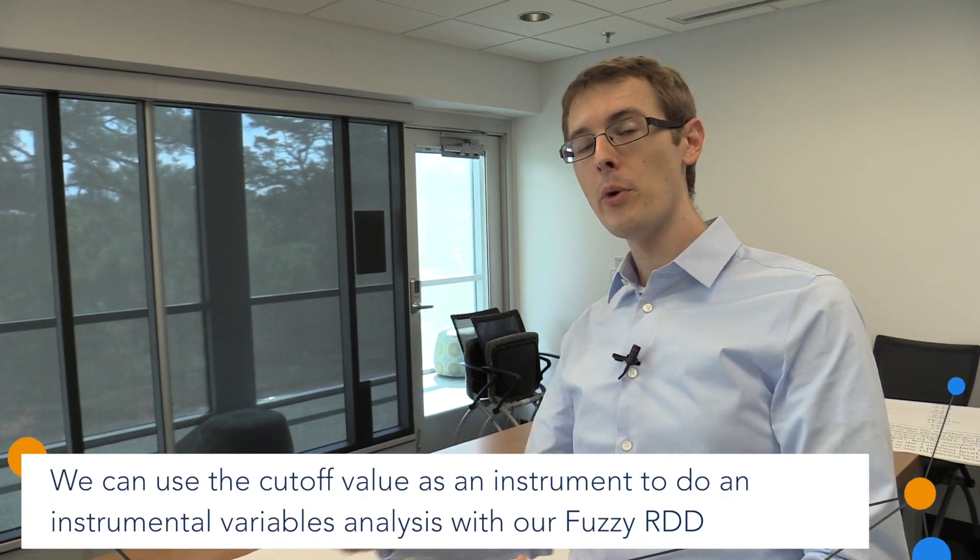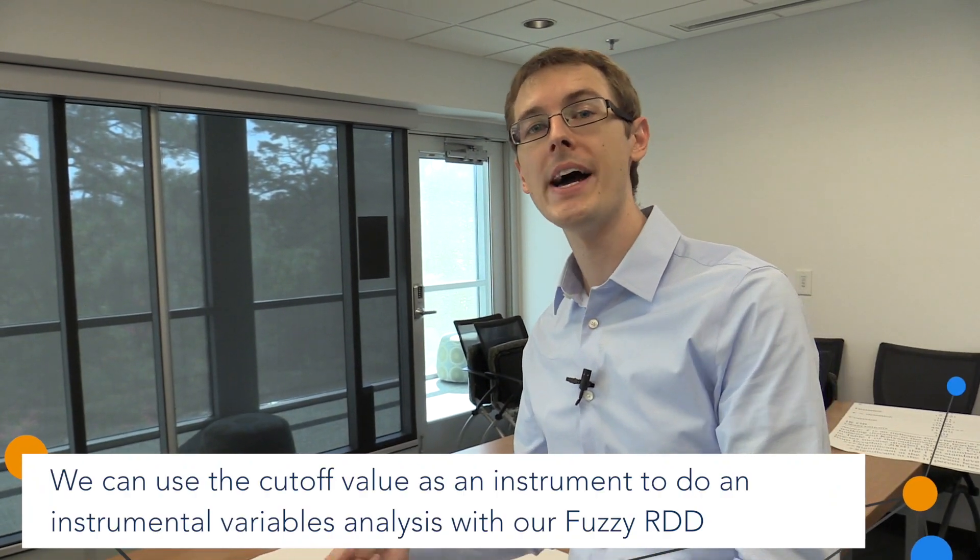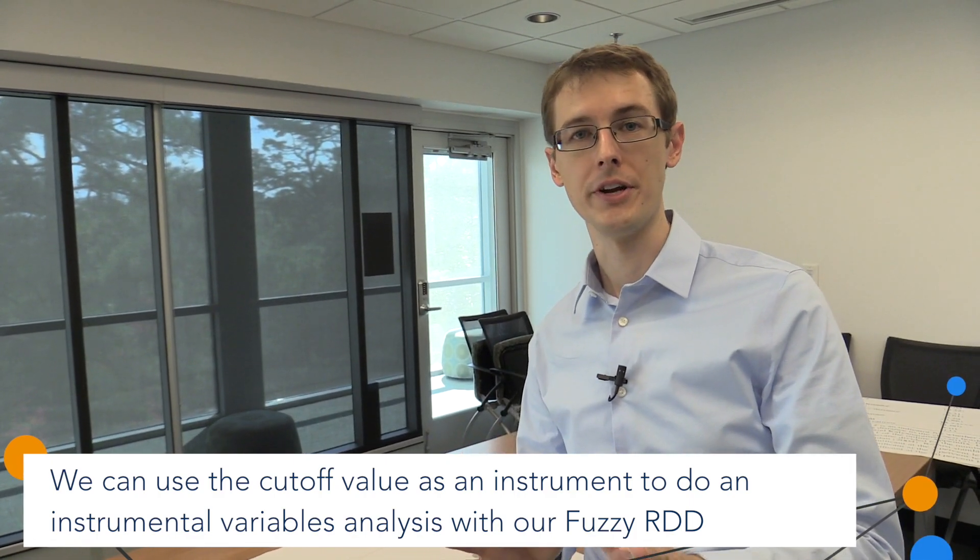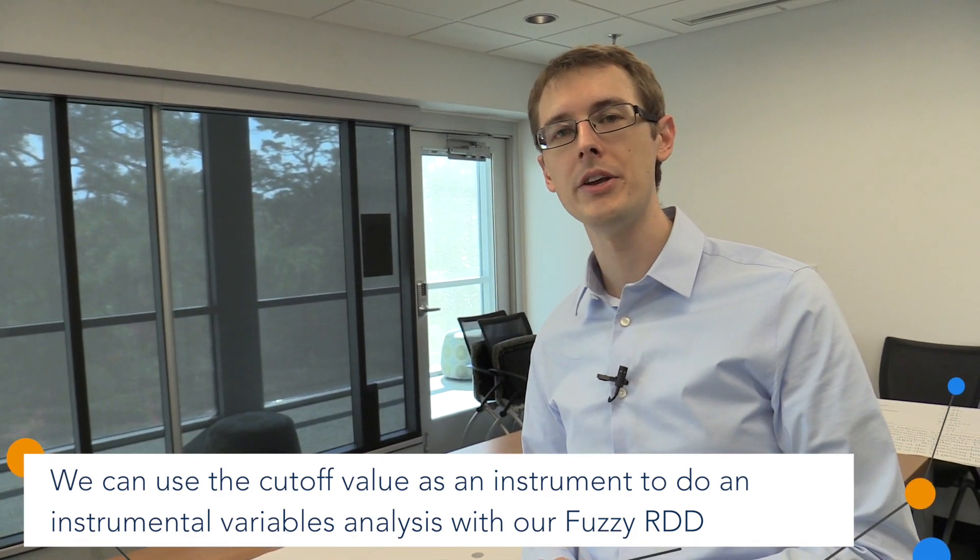Well, how did we solve the noncompliance problem? One way was by using instrumental variables. And that's exactly how we can solve the fuzzy RDD problem. We can use which side of the cutoff you're on as an instrument for whether you get treated or not. So that's because if you're on one side of the cutoff, that makes you a lot more likely to get treated, although it doesn't completely determine whether you're treated or not.